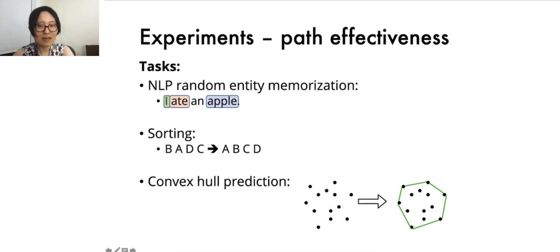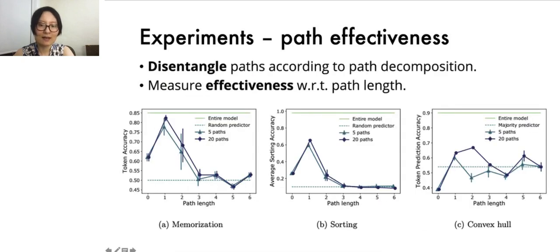We do so for three different tasks: random entity label memorization in natural language, where the model learns to memorize randomly assigned entity labels on tokens; two, learning to sort sequences of letters; and lastly, convex hull prediction, where the model learns to predict the convex hull of a set of points on the plane.